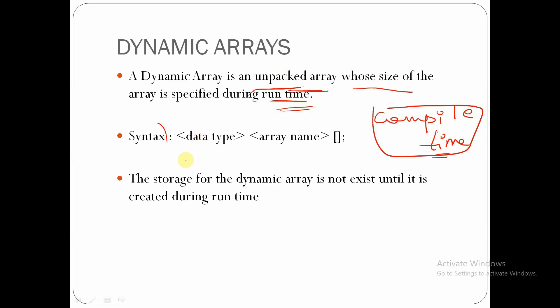The syntax of dynamic arrays is as follows: data type, followed by array name, followed by square brackets. This is the syntax for a dynamic array. The storage of dynamic arrays does not exist until it is created during runtime.